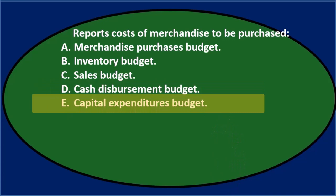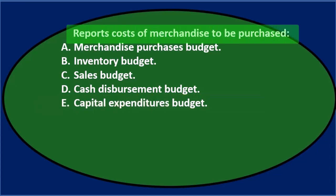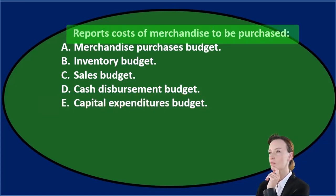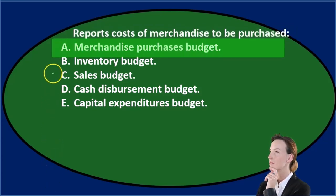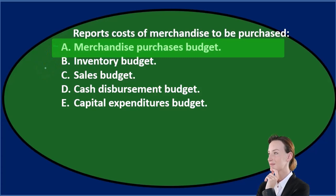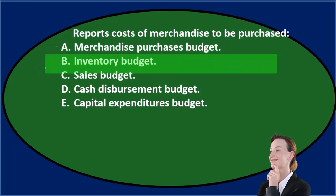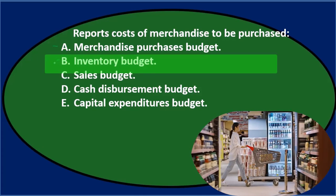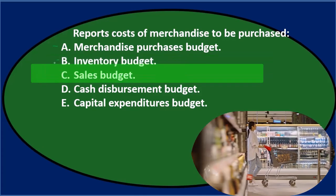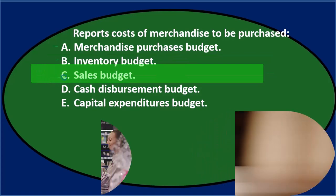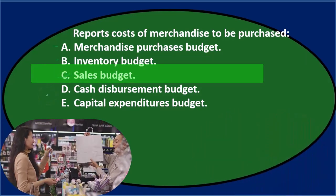Let's go through this again using the process of elimination. Reports costs of merchandise to be purchased. A. Merchandise Purchases Budget — sounds awfully reasonable, I'll keep that one. B. Inventory Budget — that sounds kind of reasonable too, because we're purchasing merchandise, inventory, so I'll keep that. C. Sales Budget — that would be selling stuff, not purchasing stuff, so I don't think that's it.